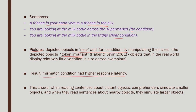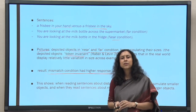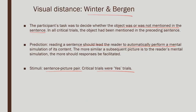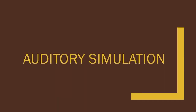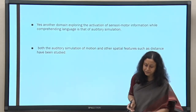If you read a sentence about a far-distance object — like 'you see the milk bottle across the supermarket' — and then see the same object shown in small size, you recognize it much more quickly compared to if it is shown large. This shows that when reading sentences about distant objects, comprehenders simulate smaller objects. This is also in keeping with the earlier findings.